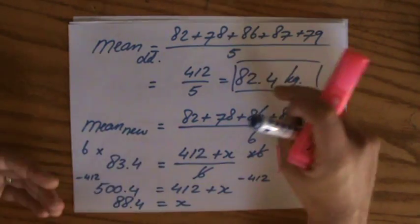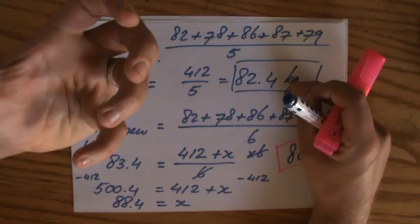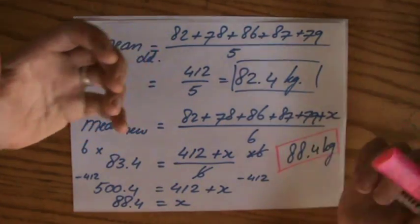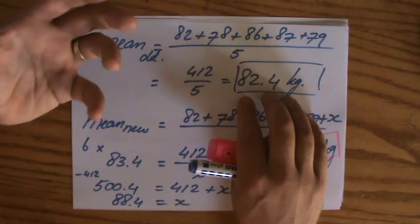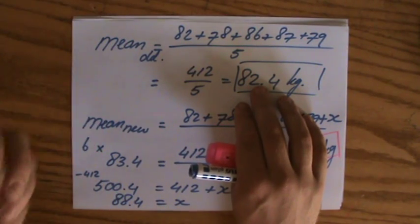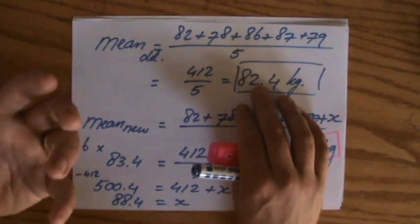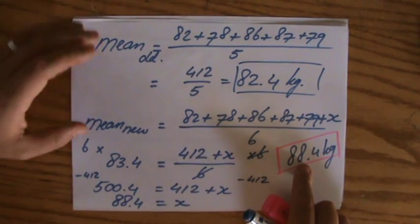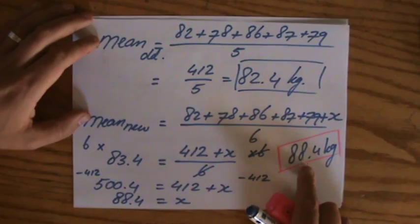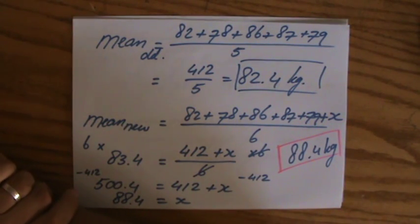Secondly, if the mean goes up, that means that the weight of this new person has to be more than the old mean. Again, if the mean is going up, then the weight of this new person has to be larger than that mean. And indeed it is. But it's still a weight that somebody can have. It's completely acceptable. It's not too heavy.